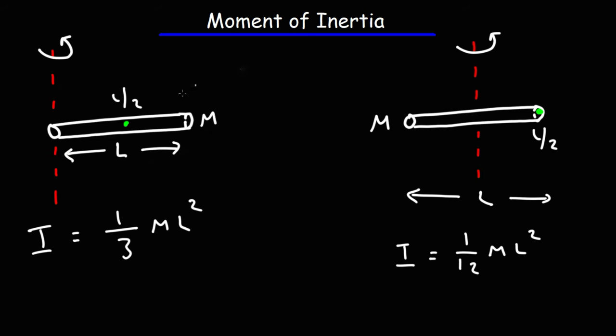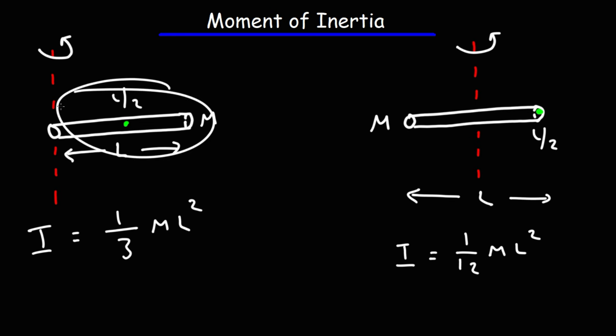Because more of the mass in this situation is further away from the axis of rotation, even though the total mass is still the same, the way the mass is distributed relative to the axis of rotation is different. Because we have more mass distributed further away from the axis of rotation, this slender rod has a larger moment of inertia. Make sure you understand that concept when dealing with inertia.